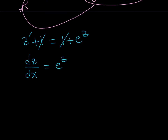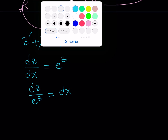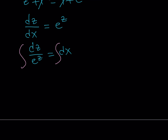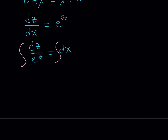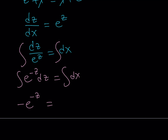Now I can go ahead and integrate both sides because it's separated. The integral of 1 over e to the power of z means e to the power of negative z dz. How do you integrate e to the power of negative z? If you differentiate e to the power of negative z, you get negative 1 times e to the power of negative z from the chain rule. So the integral is negative e to the power of negative z. And the integral of dx with respect to x is just x. At this point you add your constant — we can add it on either side.